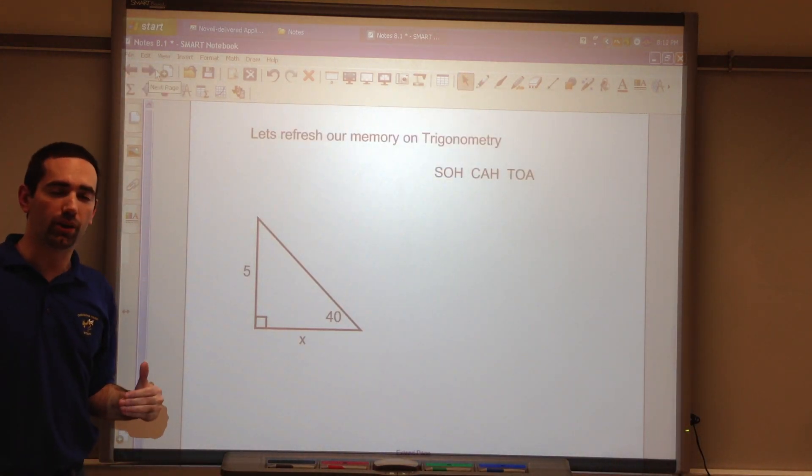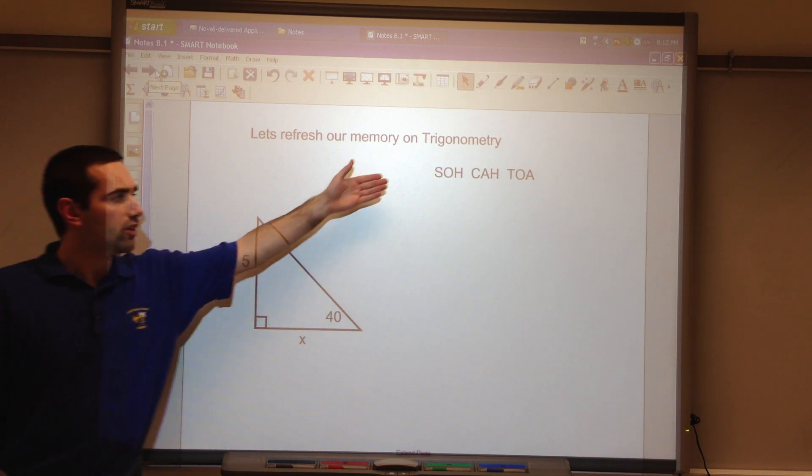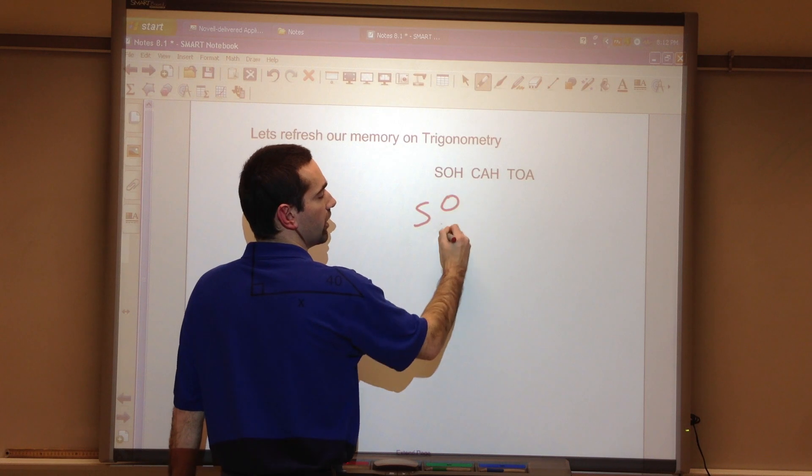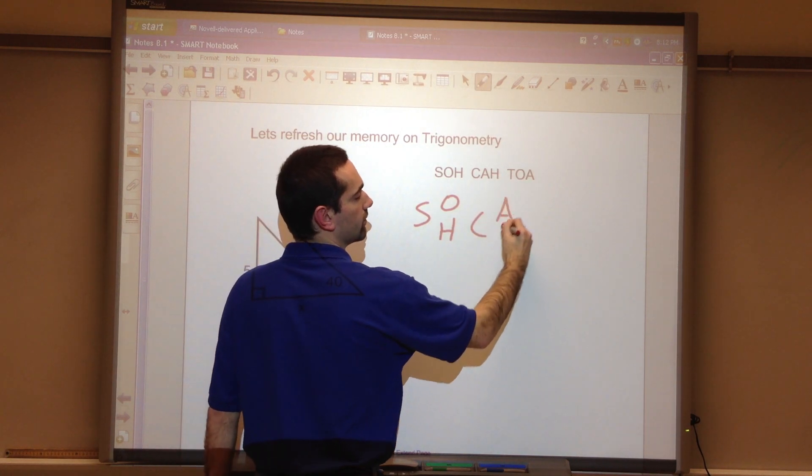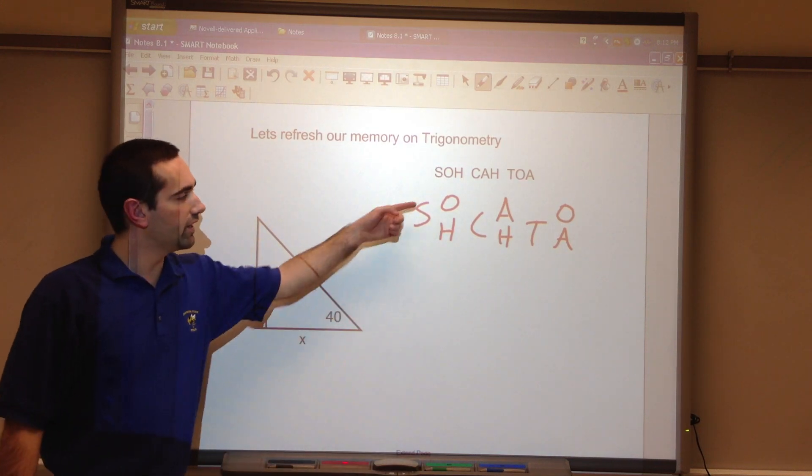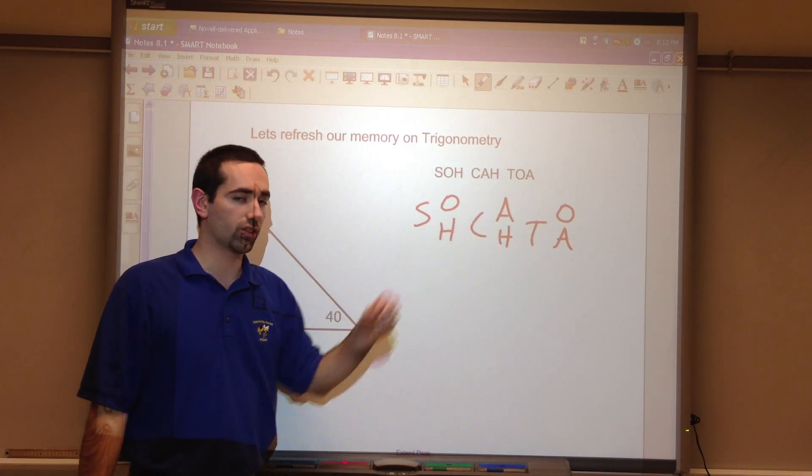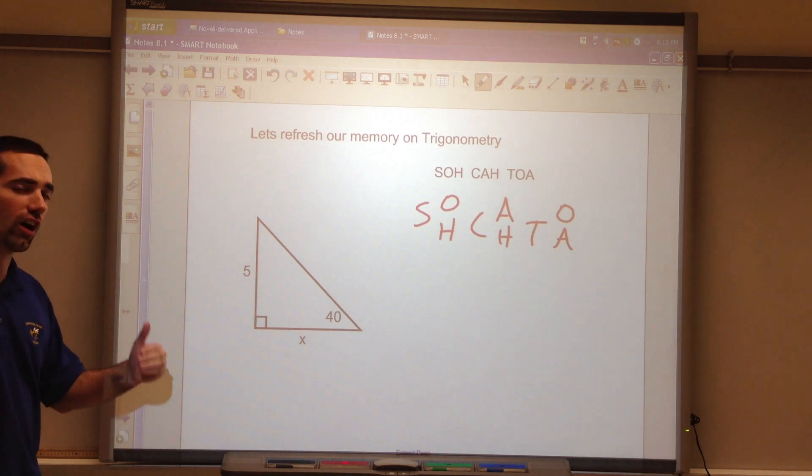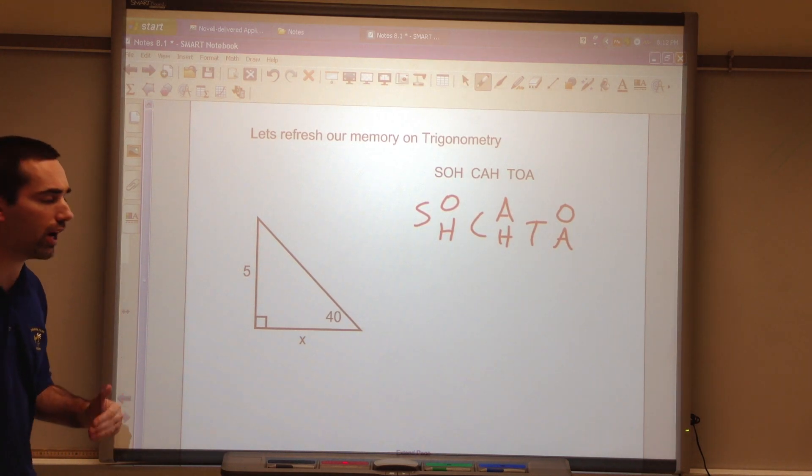Let's refresh our memory about trigonometry. SOH CAH TOA. Some people like writing it like this. It indicates your fractions, the way they are written. So SOH CAH TOA, you want to identify your opposite, adjacent, and hypotenuse.